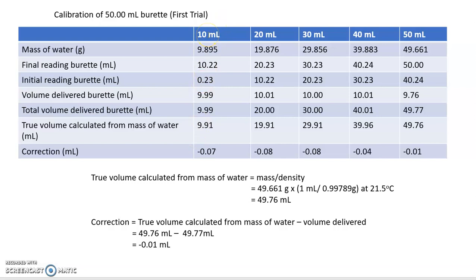For example, for 10 ml delivered from the burette, the exact volume delivered will not exactly be 10 ml. You have to refer to the final reading and also the initial reading of the burette to get the volume delivered. The volume delivered equals the final reading minus the initial reading of the burette.